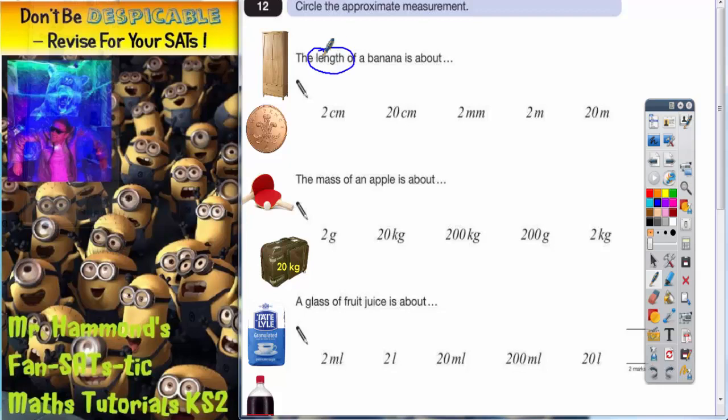Now when we're dealing with length, it's worth remembering that the smallest unit is millimeters, and then you need ten of those to make a centimeter, and then you need a hundred centimeters to make a meter, and then you need a thousand meters to make a kilometer. So the smallest is millimeters, the biggest is kilometers.